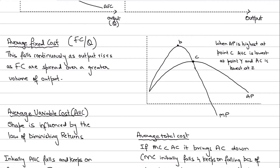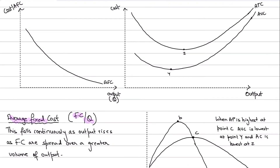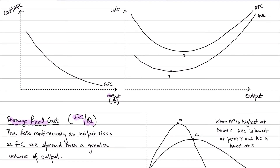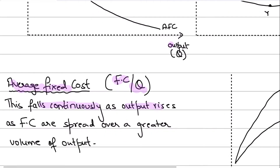Average fixed cost is basically your fixed cost divided by your quantity — that is, fixed cost per unit. Now if you want to draw the graph of your average fixed cost, remember: whenever you're drawing these graphs you measure your quantity on the x-axis and your cost on the y-axis. The average fixed cost graph will be drawn as a downward sloping curve, because your average fixed cost is constantly falling as your output is rising.